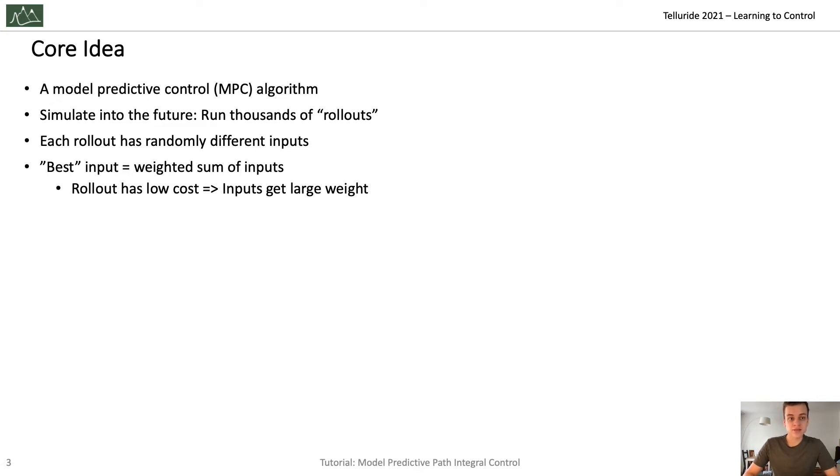The intuition of that is if a rollout had a low cost, then the inputs that produced them were good, so they get a large weight. And you repeatedly do this procedure. You update the inputs and apply the whole loop again.